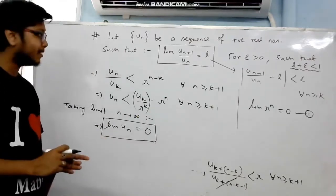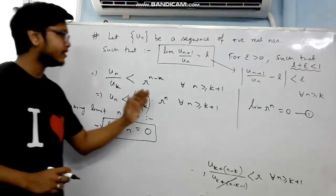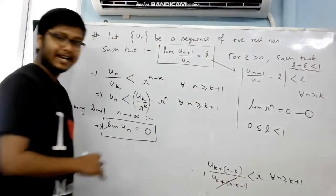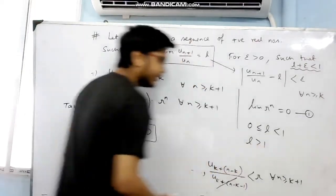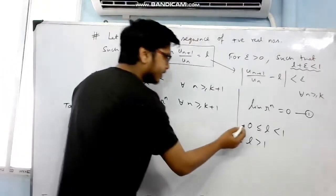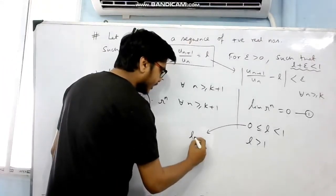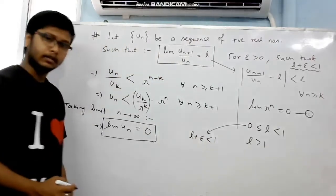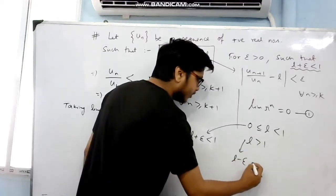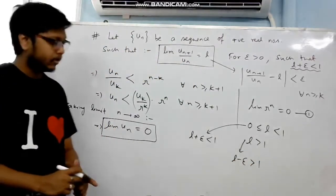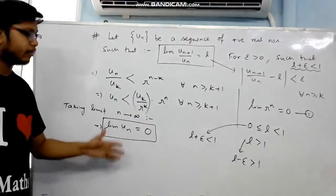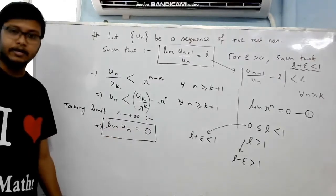For the second part where l > 1, we start by choosing ε such that l − ε > 1. Then proceed exactly similarly, and we can conclude that limit un = ∞.